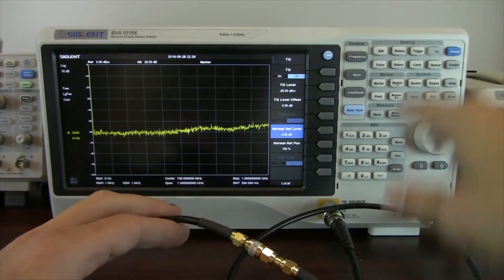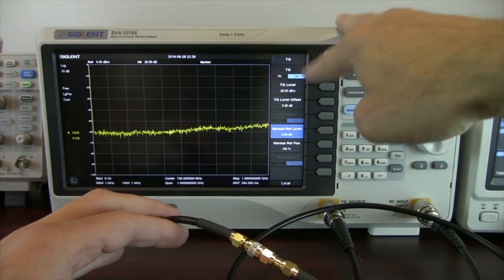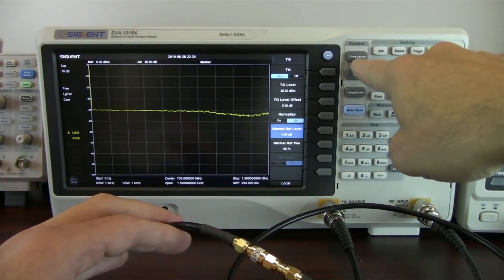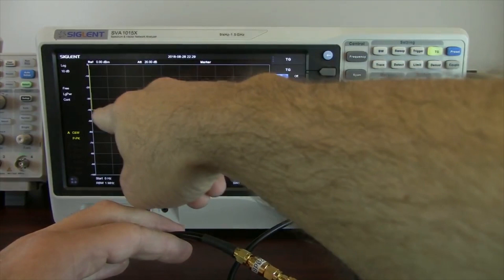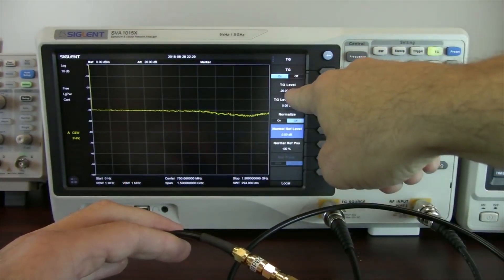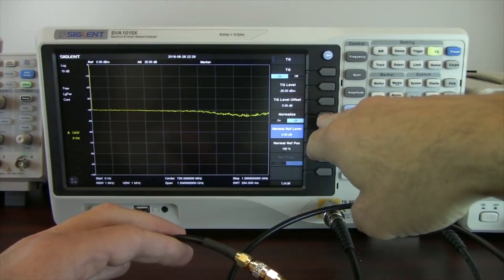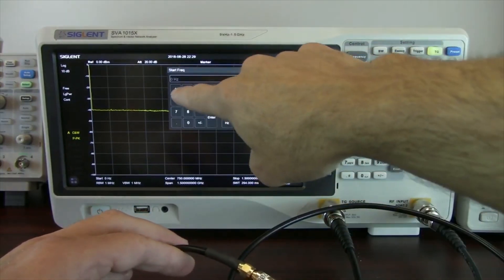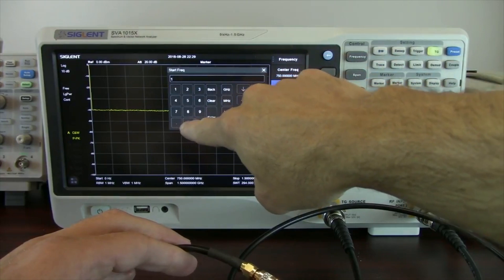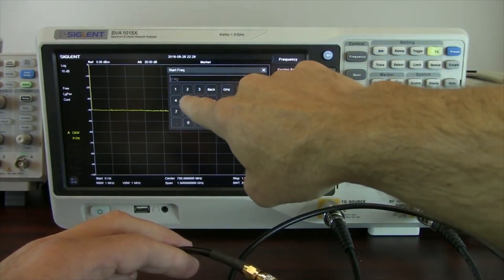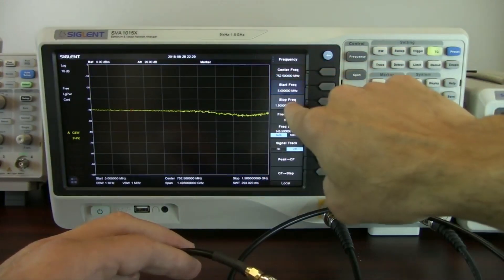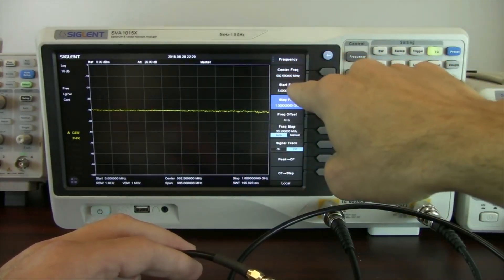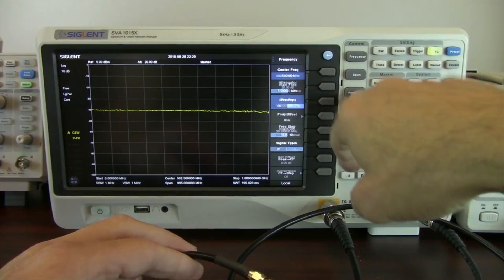Once we have everything connected for the normalization, we're going to turn the tracking generator on. You'll see we're at minus 40 dBm, even though we programmed minus 20. I'm going to change the frequency. This instrument's touchscreen, so we can go, let's go 5 meg start frequency, and let's go stop frequency of 1 gig. So now we're going to go from 5 meg to 1 gig.